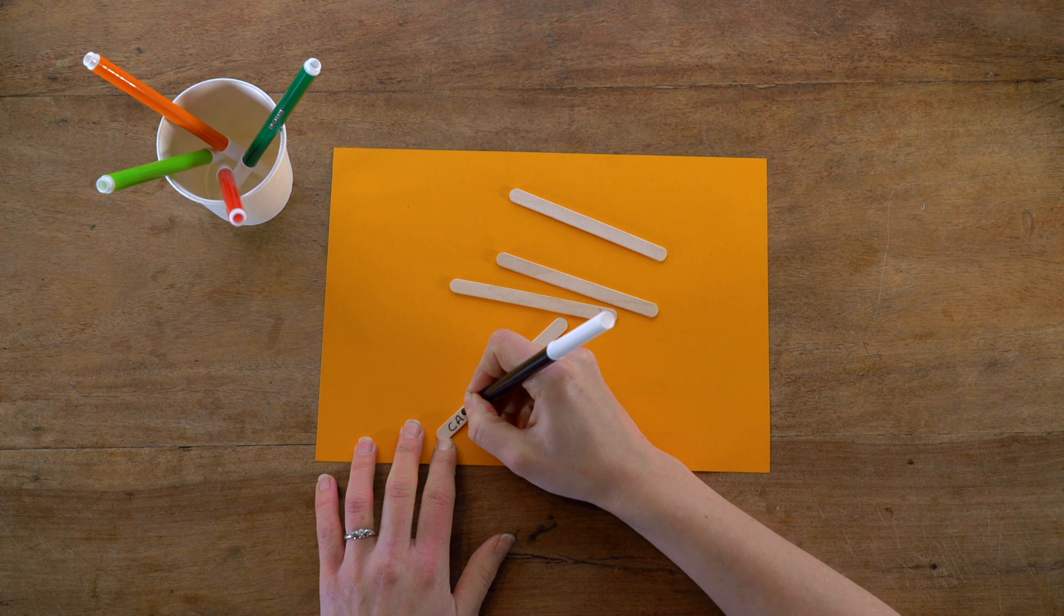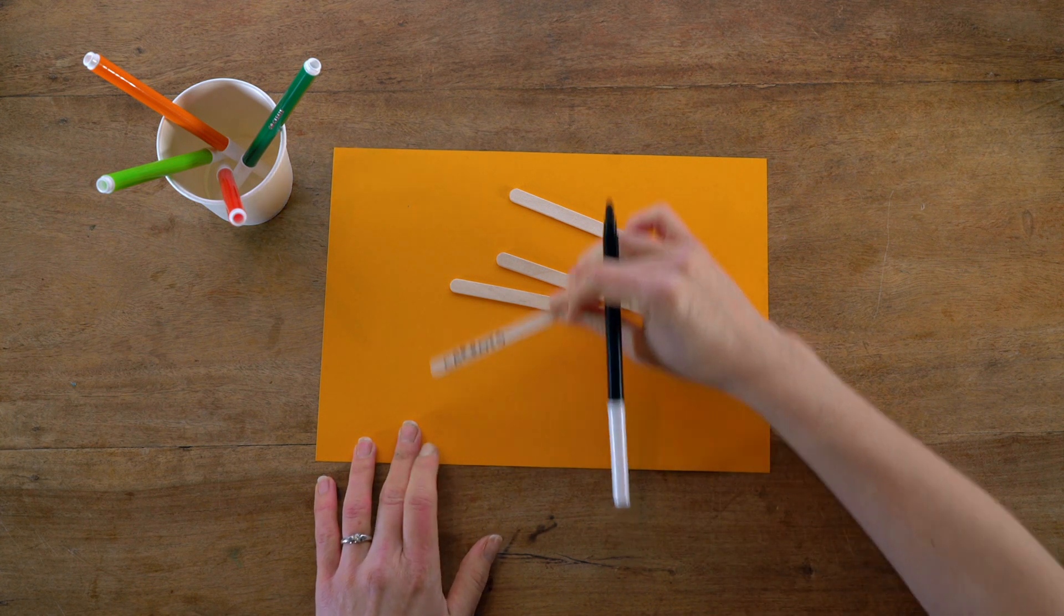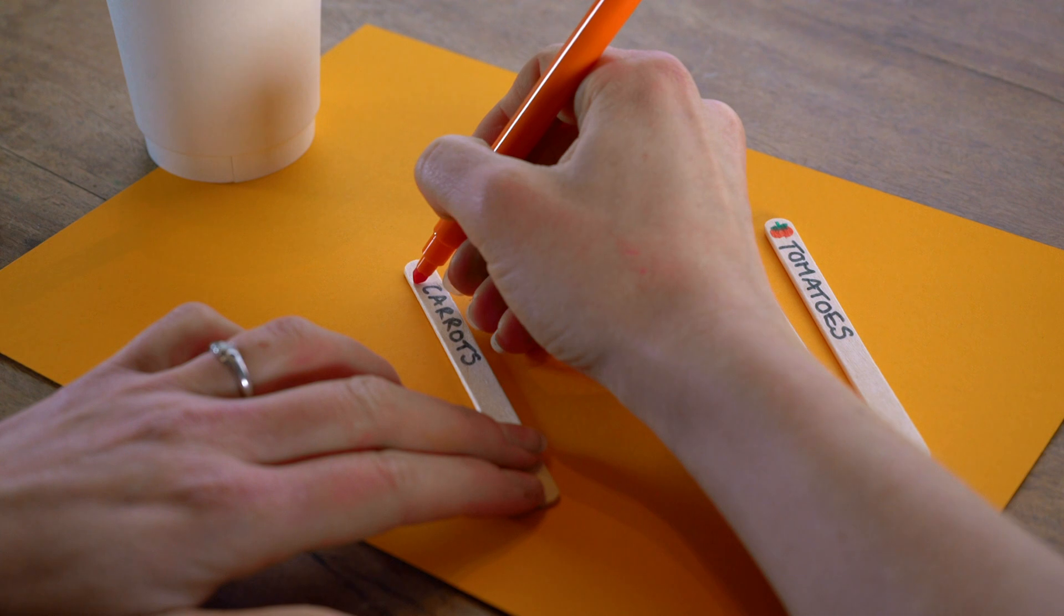Wooden ice lolly sticks can have so many different uses. If you plant seeds in your garden or in a pot you can use them as markers to remind you of what they are.